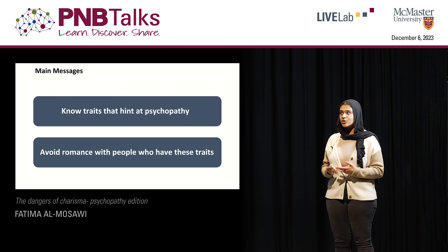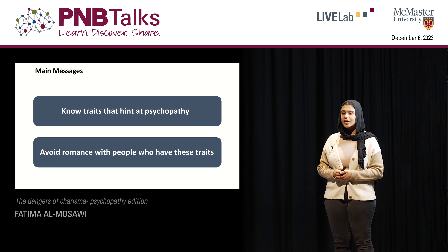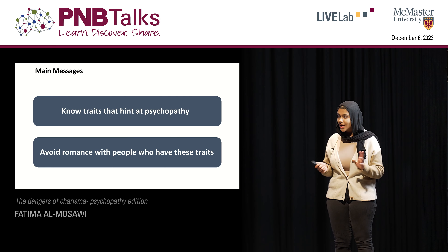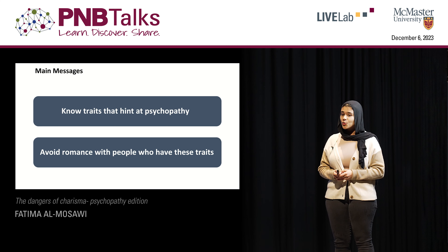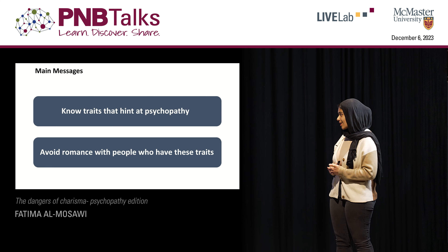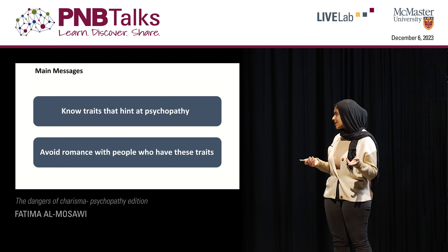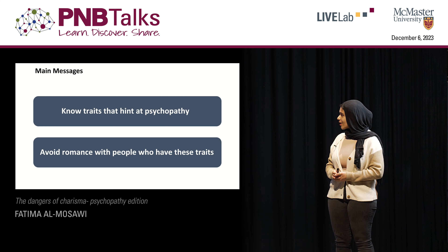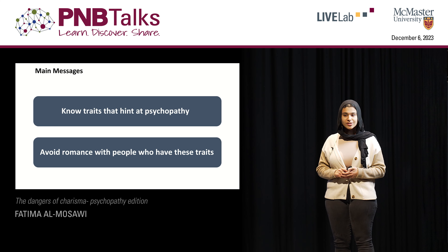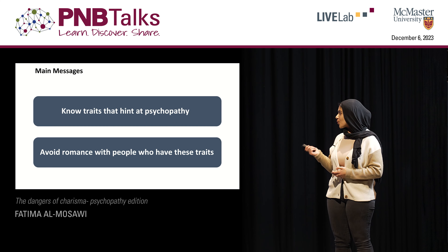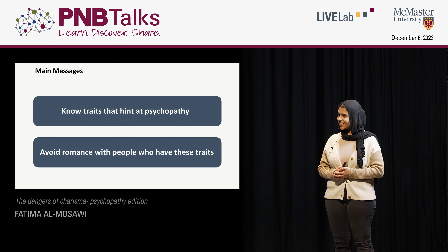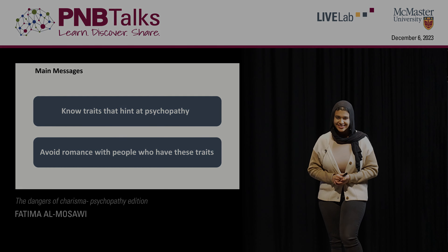So what should we take away from the story of Jess and Tim? A Canadian psychologist who has studied psychopathy for over 25 years estimates that there are nearly 2 million psychopaths in North America alone. Keeping this in mind, if we want to avoid getting caught up in a situation like Jess did, we should: one, know the traits that hint at potential psychopathy, and two, avoid romantic entanglement with people who exhibit such traits. Thank you.